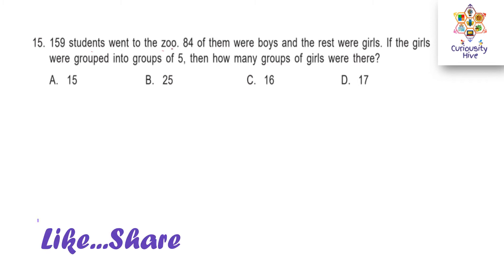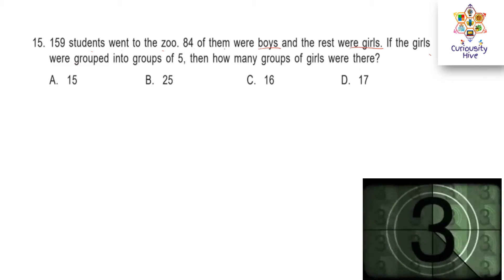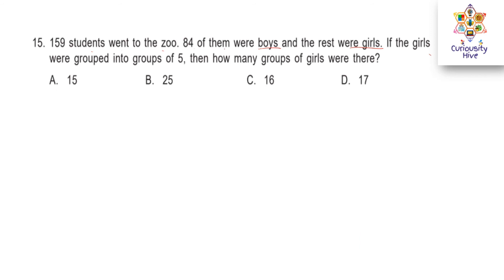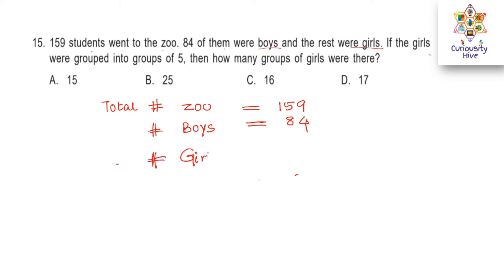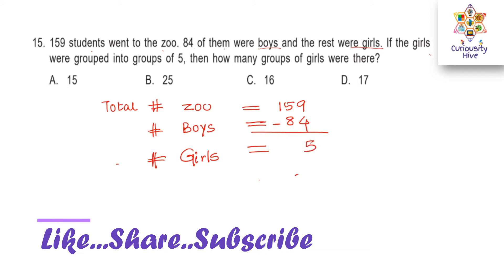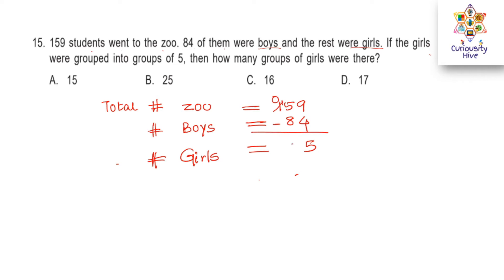Next question. 159 students went to the zoo. 84 of them were boys and the rest were girls. If the girls were grouped into groups of five, how many groups of girls were there? The total number of students is 159 and the number of boys is 84. The number of girls is 159 minus 84: 9 minus 4 is 5, then 15 minus 8 is 7. So 75 were girls.